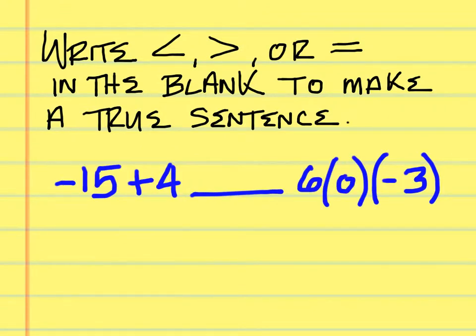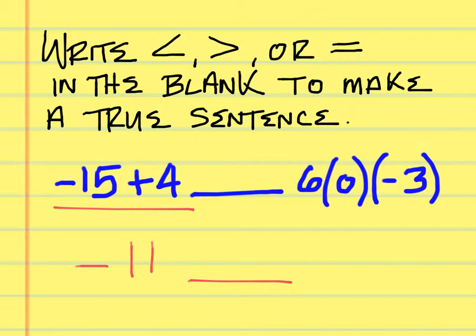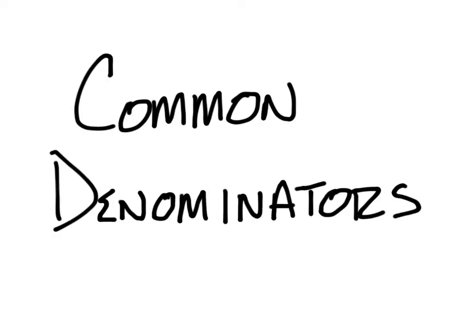What about this one: what is negative 15 plus 4? You can use a calculator — it is negative 11. What is 6 times 0 times negative 3? What's 6 times 0? Zero. What's 0 times negative 3? Zero. Is negative 11 less than, greater than, or equal to 0? It is less than — that is right.